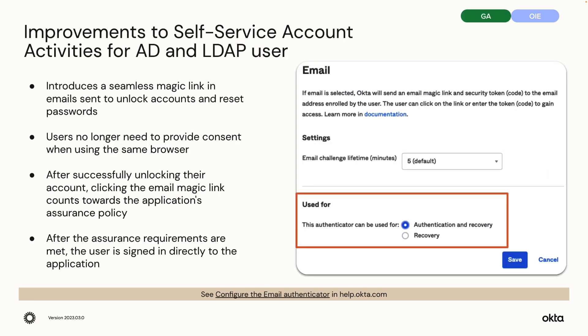Improvements to self-service account activities for AD and LDAP users. Previously, the self-service unlock and self-service password reset flows created unnecessary friction for AD and LDAP users. This enhancement introduces a seamless magic link in emails sent to unlock accounts and reset passwords. Users no longer need to provide consent when using the same browser. After successfully unlocking their account, clicking the email magic link counts towards the application's assurance policy, and after the assurance requirements are met, the user is signed in directly to the application.